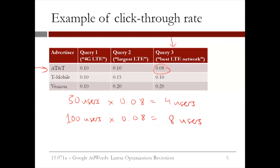In the next video, we will define additional data that we will need to formulate the problem. In particular, we will see how the click-through rate and the price per click can be combined together to obtain a new quantity called the average price per display. This derived quantity will form a crucial part of our linear optimization model.